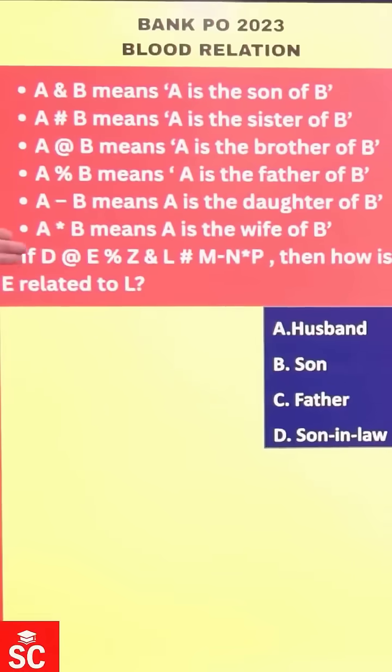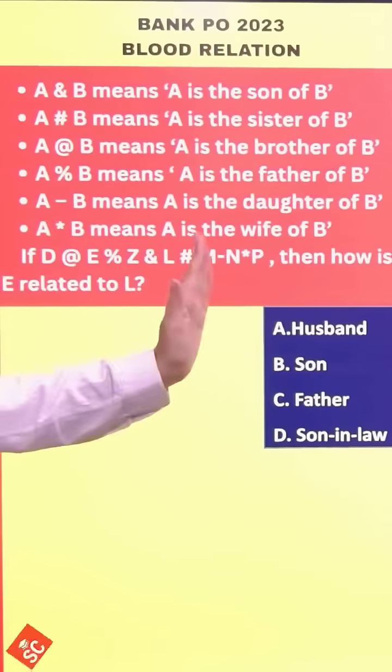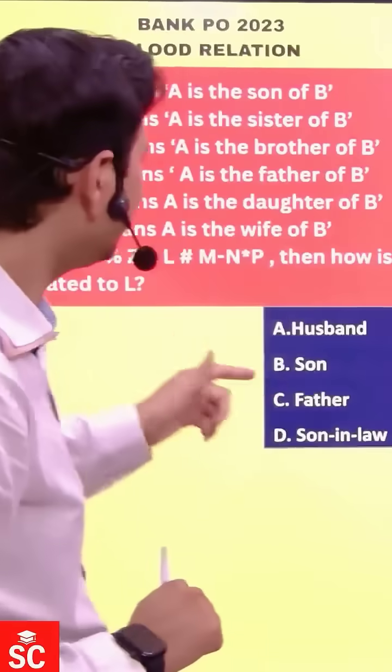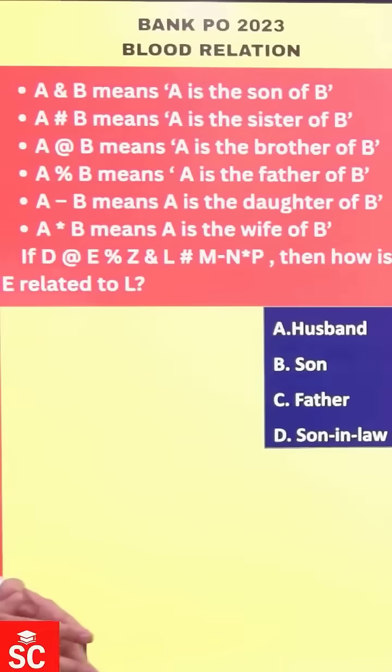These are the symbols and this is the question. We will solve this question with the easiest trick: the Generation Gap Method. Here is the funda. Whenever you move up in the family tree — like father, uncle, and grandfather — then you have to add.